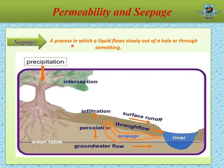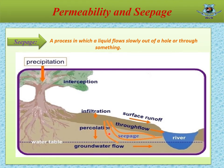Seepage is a process in which a liquid flows slowly out of a hole or through something. In soil, seepage is the flow of liquid into the soil. When precipitation occurs, some of the raindrops fall into the branches of the tree, which is known as interception. Most of the raindrops flow over the surface, which is known as surface runoff, and during this time some water enters into the soil by means of infiltration and percolation through the voids of the soil, and finally reaches the river or groundwater. This movement of water into the soil is known as seepage.